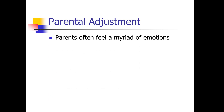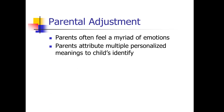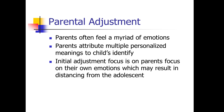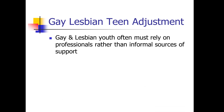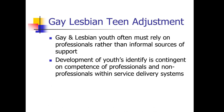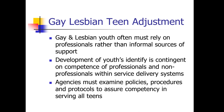Parents often feel a myriad of emotions when an adolescent comes out. Parents attribute multiple personalized meanings to the child's identity. Their initial adjustment focus is on their own emotions, which may result in distancing from the adolescent. Adolescents often don't understand the parent's need for time and guidance to adjust. Gay and lesbian youth often must rely on professionals rather than informal sources of support, and the development of the youth's identity is contingent on the competence of professionals. Agencies must examine policies, procedures, and protocols to assure competency in serving all teens, including sexual minority teens.